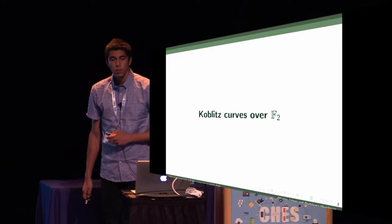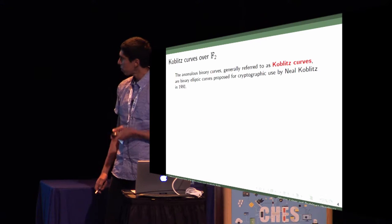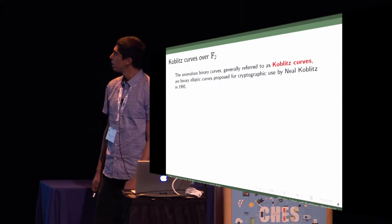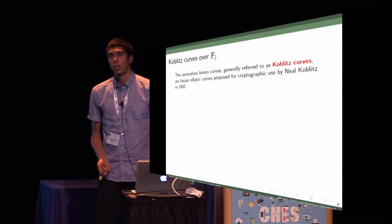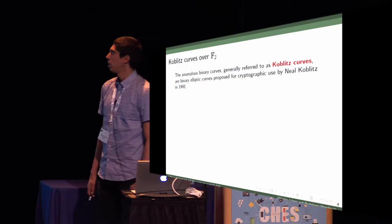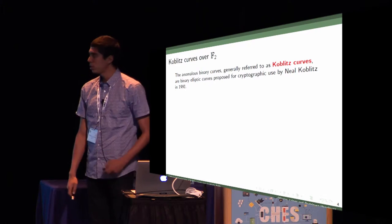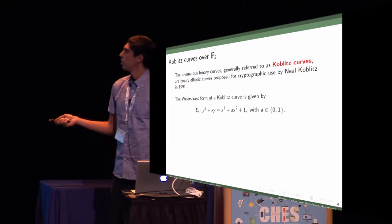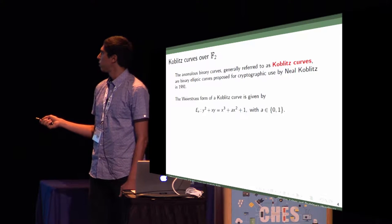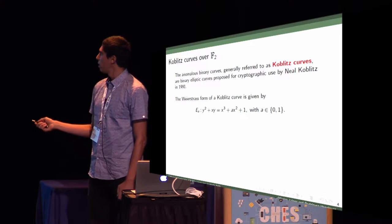Koblitz curves over F2. These curves are called anomalous binary curves. They're generally referred to as Koblitz curves because they were proposed by Neal Koblitz in 1991 for cryptographic use. This is the form of the curve, where you can choose between parameters A equals 0 or 1.